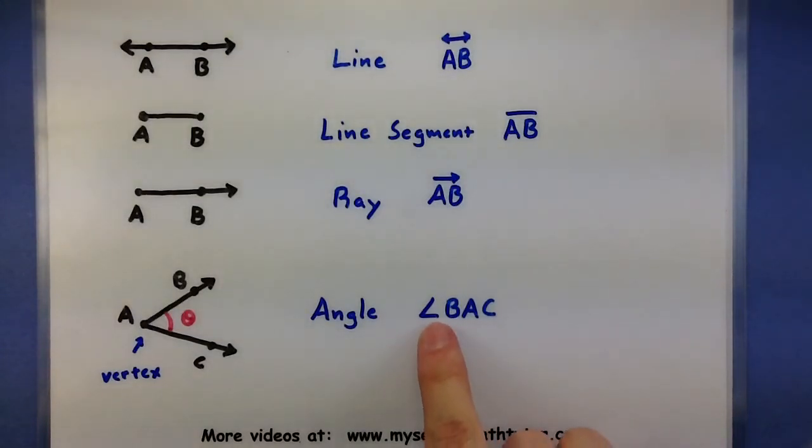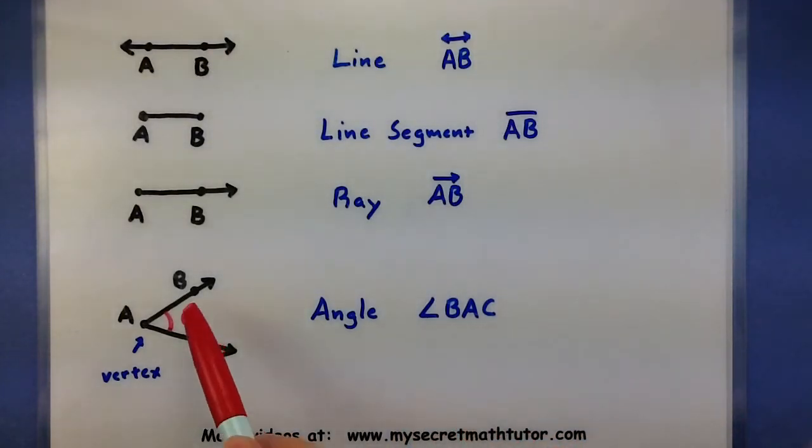The notation we use for these looks like a little L, but it's actually a little angle piece. And we mark out the three points that it'll go through. In this case, B, A, and C. The middle letter always stands for the location of the vertex.